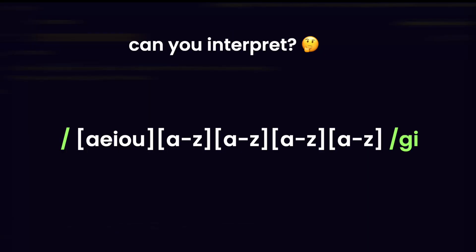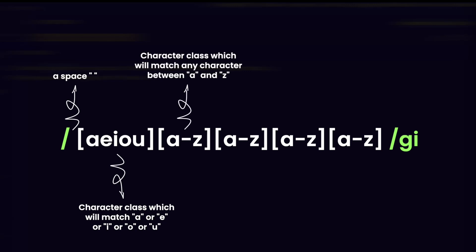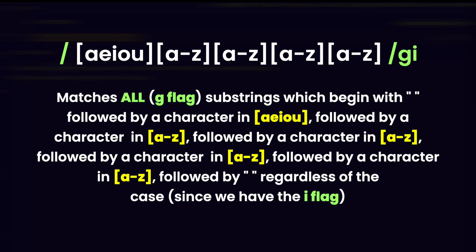For the first assignment, take a look at this regular expression on the screen. It is filled with character classes. Can you interpret what it means? Pause and try before I share the answer. So in this regular expression, I have a space, then a character class with A, E, I, O, U — which are vowels. Then I have four more character classes each being A to Z, and then another space. What this means is: a space, followed by A or E or I or O or U, followed by four characters each between A to Z, followed by a space.